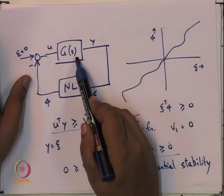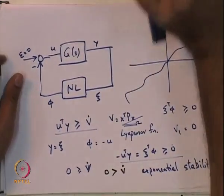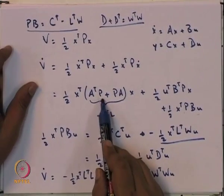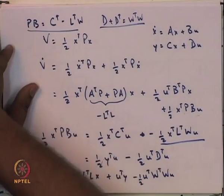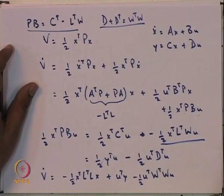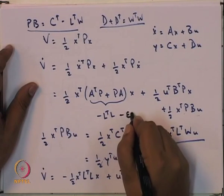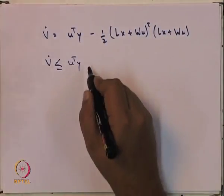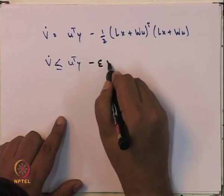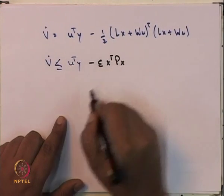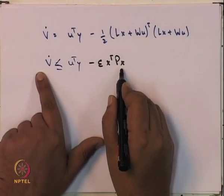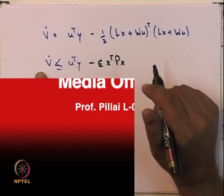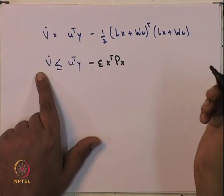If G is strictly positive real, then in the equation A^T P + PA there is an additional term εP. This term ultimately introduces -εx^T Px into V̇, which allows us to prove that the resulting closed-loop system is in fact asymptotically stable.